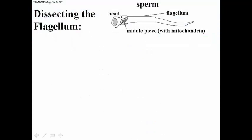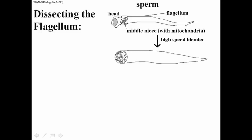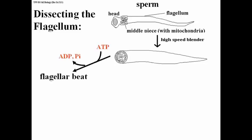You can dissect a cilium or flagellum and analyze the structures inside. Here we have a sperm with various parts shown, but we're going to concentrate on the flagellum, which you can actually pop off the sperm using a high-speed blender. What you have then is a membrane-bound 9+2 array of microtubules, and this isolated flagellum will actually beat — just like a real flagellum — if you add ATP. It is a model for the intact sperm in terms of the movement of the sperm tail.